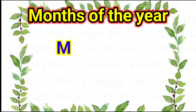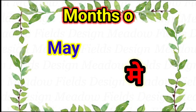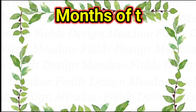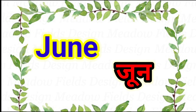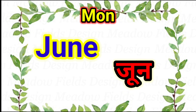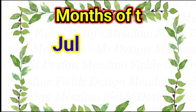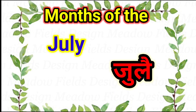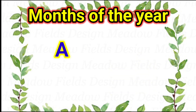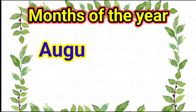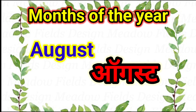M-A-Y, May — May is the fifth month of the year. J-U-N-E, June — June is the sixth month of the year. J-U-L-Y, July — July is the seventh month of the year. A-U-G-U-S-T, August — August is the eighth month of the year.